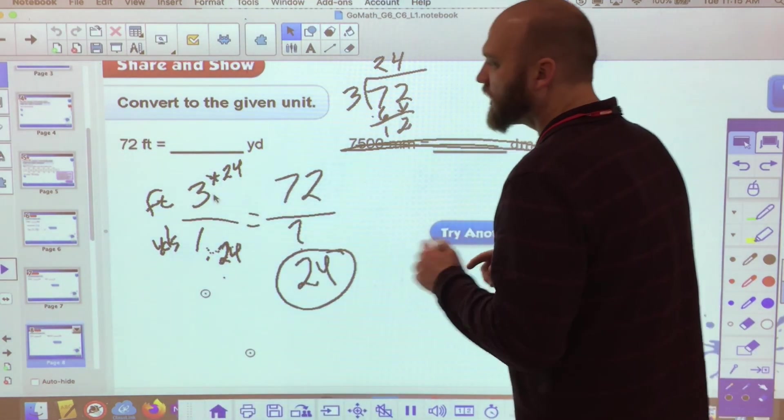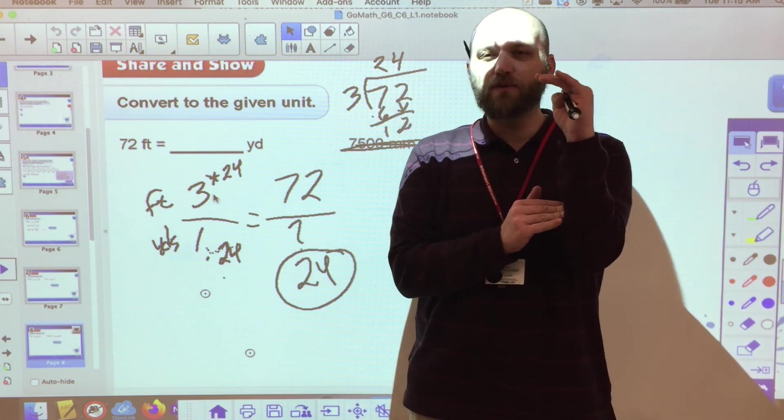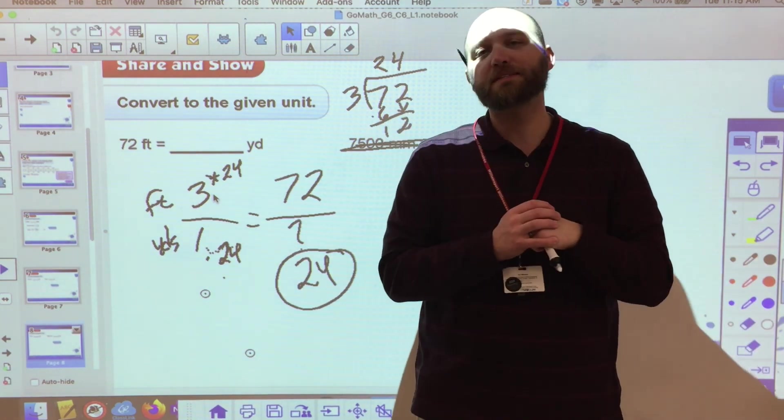So again, how many yards are in seventy-two feet? Twenty-four. So take a look at your unit rate. Make some kind of conversion between the two of them and make it make sense.